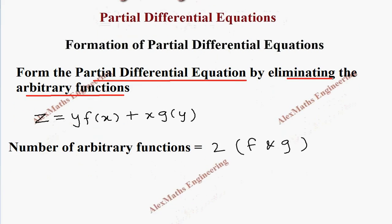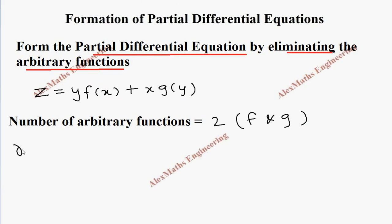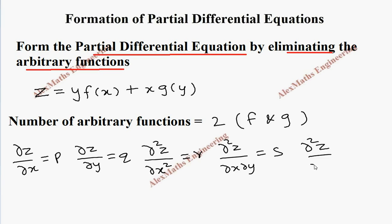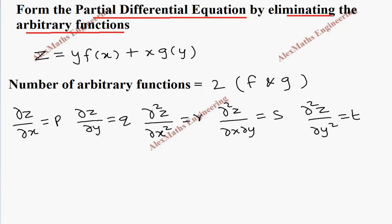We are going to use dou z by dou x, which is named as p, then dou z by dou y, which is named as q, then dou square z by dou x square, which is named as r, then dou square z by dou x dou y, which is named as s, and dou square z by dou y square, which is named as t, to eliminate the arbitrary functions.